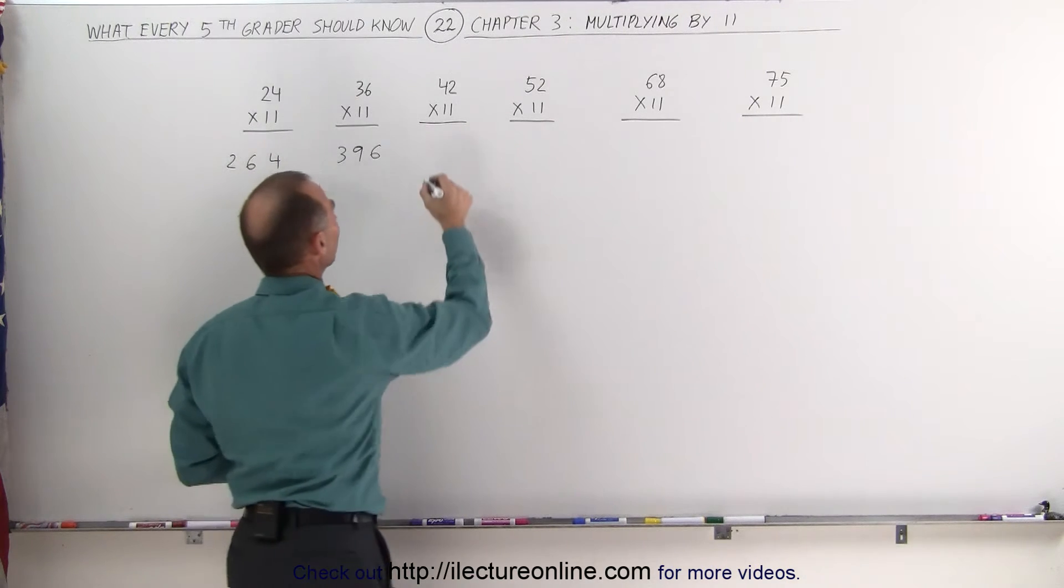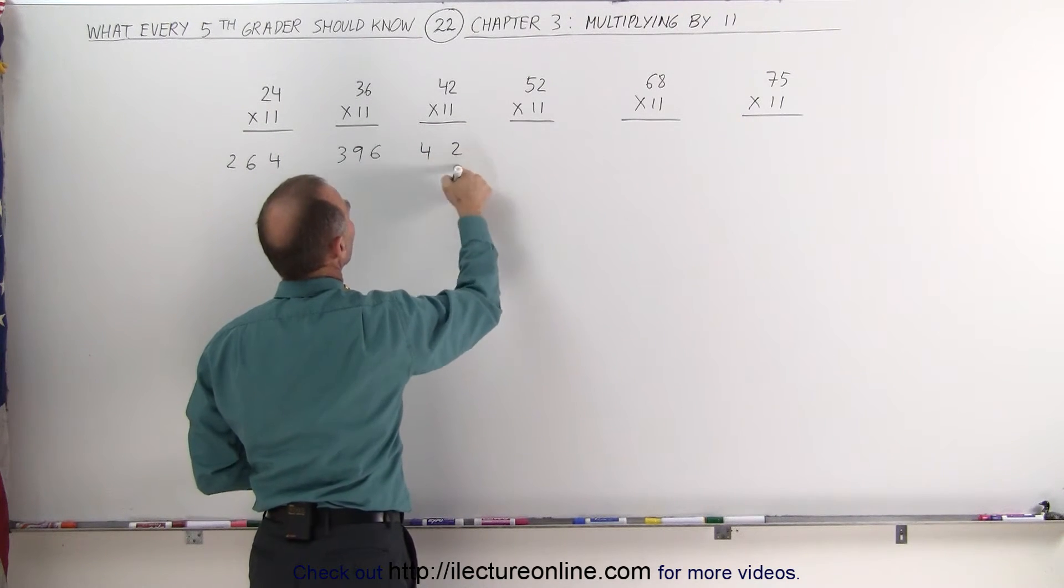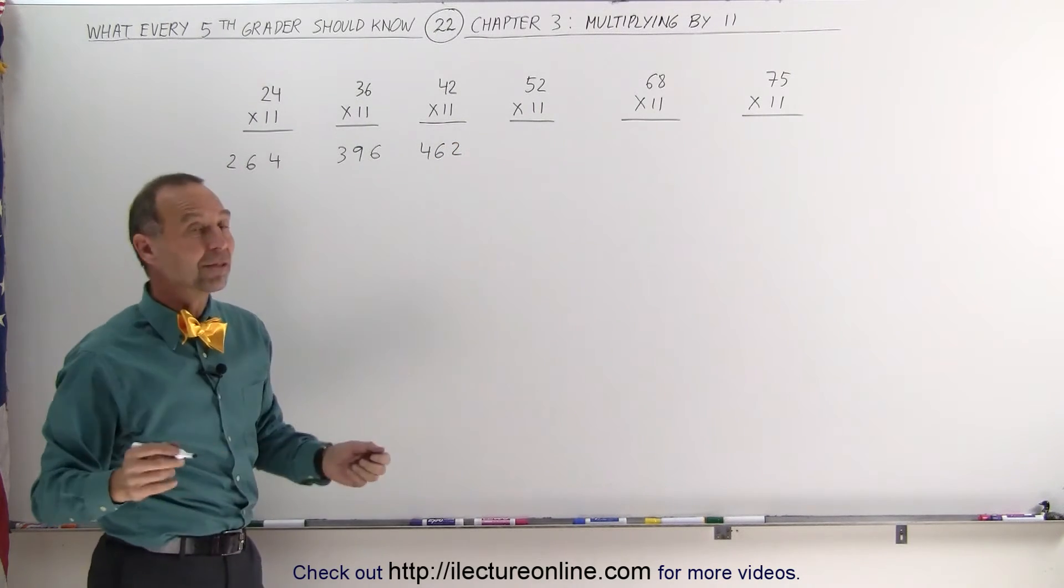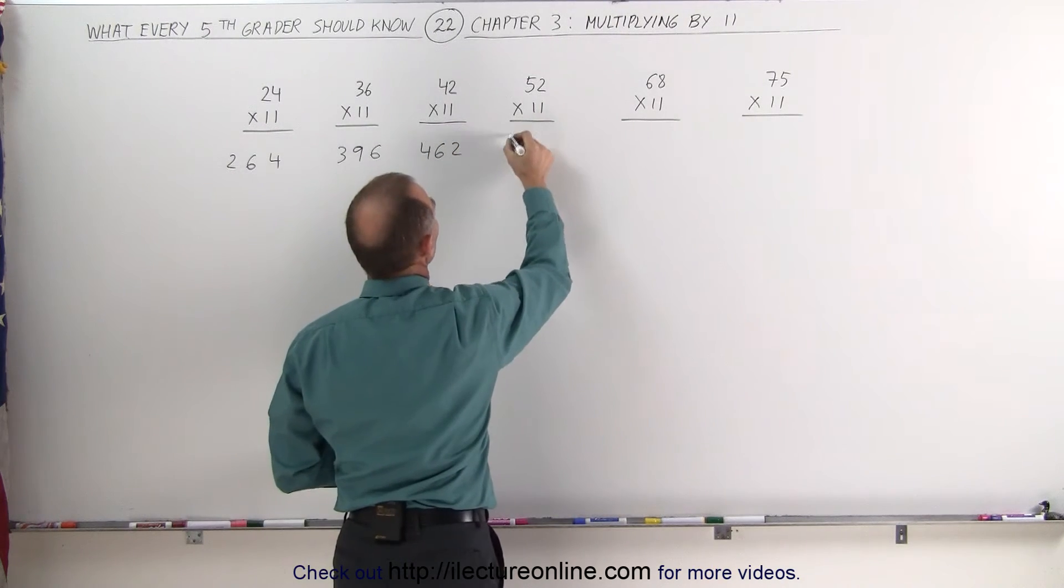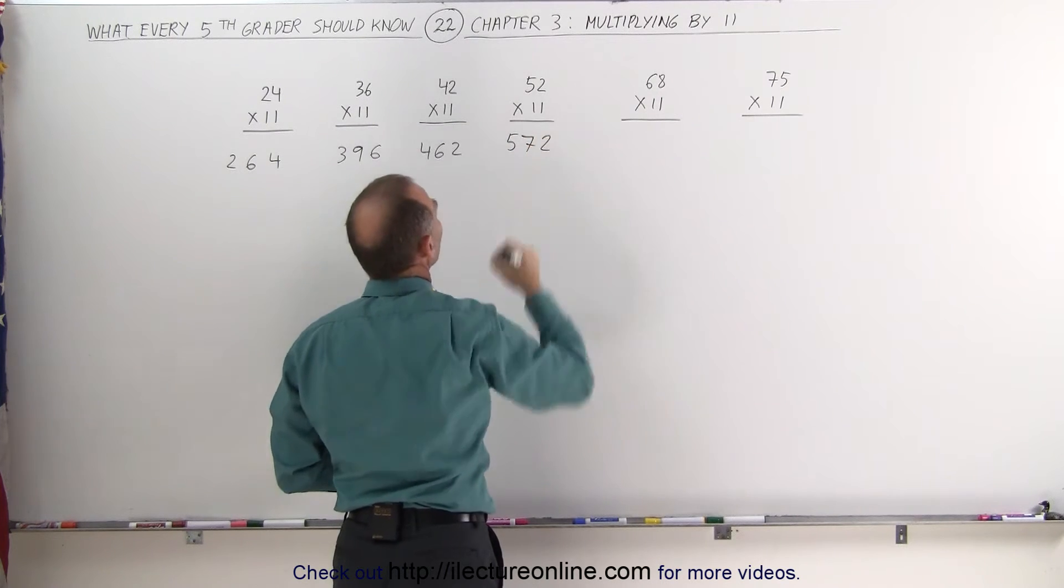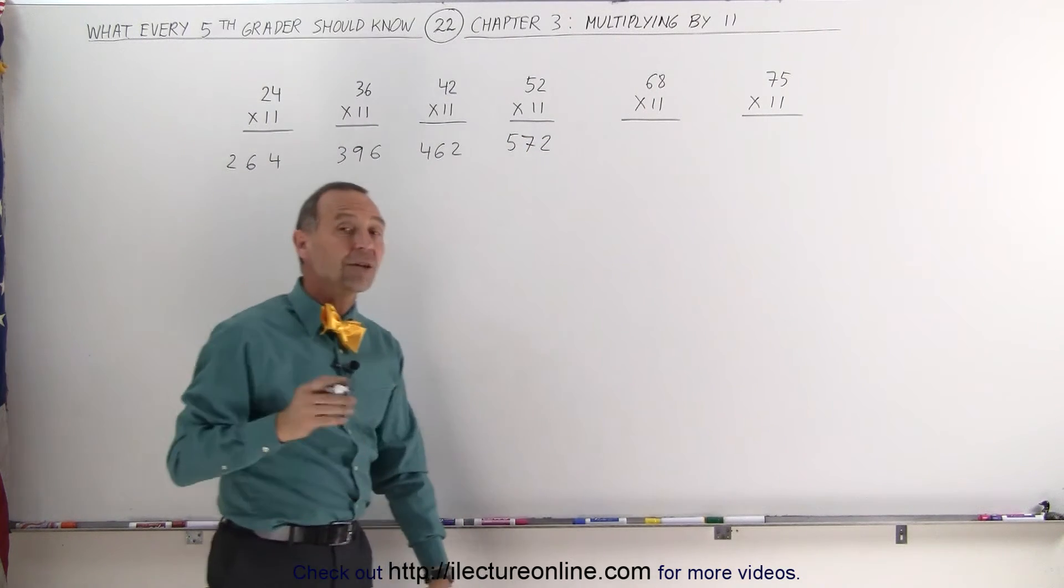How about 42 times 11? Write the numbers like this, add them together, you get a 6, 462. How about 52? Separate the two numbers, add them together, you get 7, it's 572. Those are pretty neat tricks.